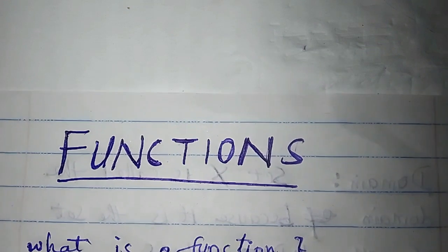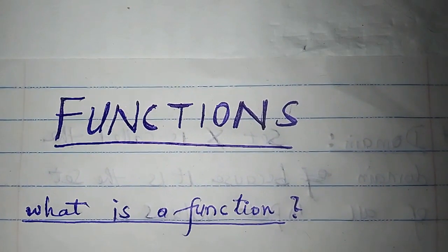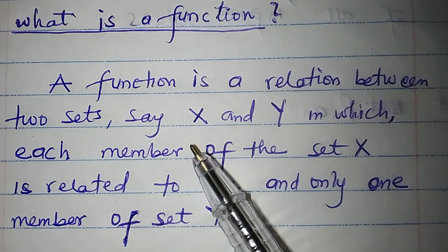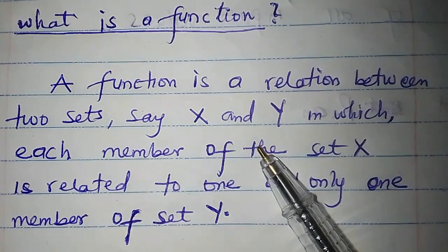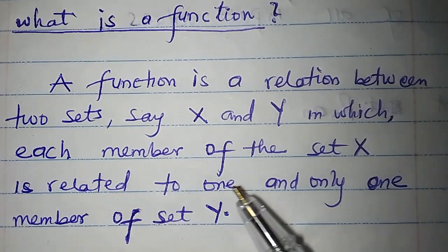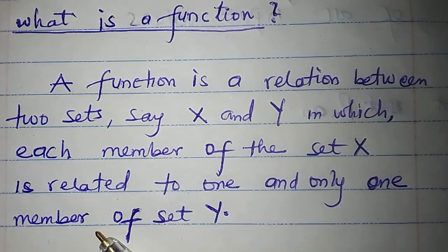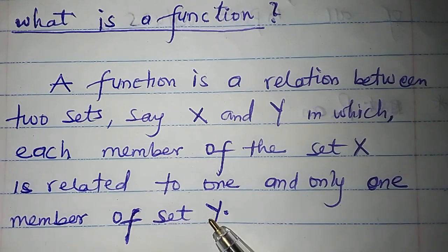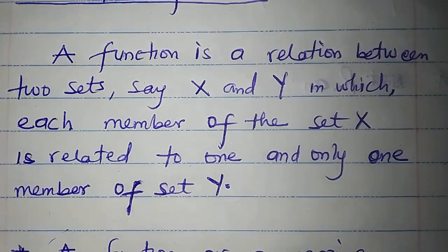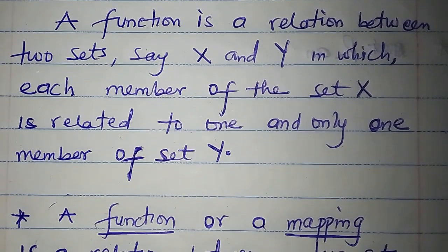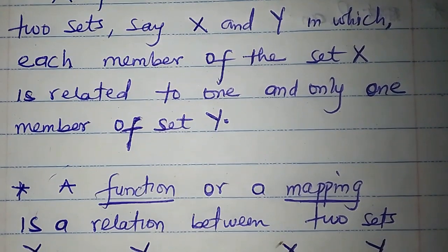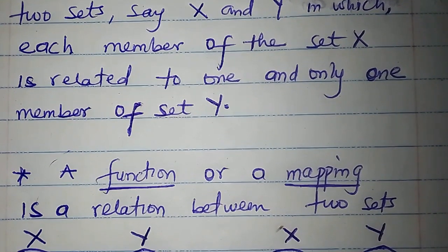What is a function? A function is a relation between two sets, let's say X and Y, in which each member of the set X is related to one and only one member of set Y. A function is also called a mapping.